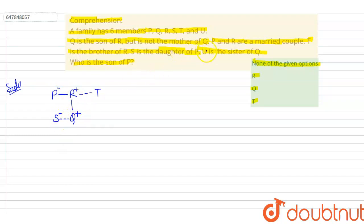And it's also written U is the sister of Q. So Q's sister is U. So I'll put a negative sign on U also.